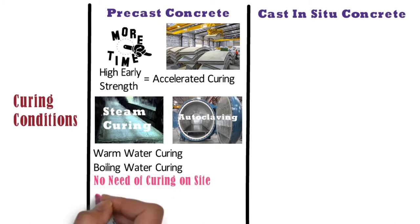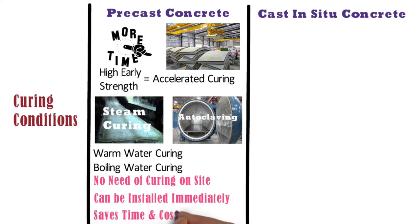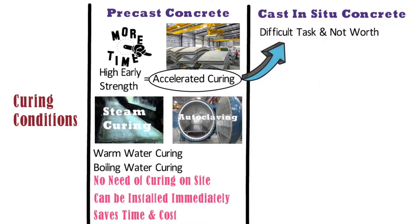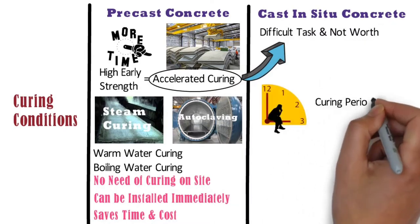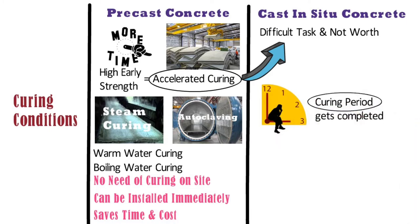Precast members can be installed immediately with no need of waiting for them to gain strength, unlike cast in place. Therefore, it saves time and reduces the cost of construction. Whereas in case of cast in place concrete, accelerated curing is a difficult task and not worth it. Hence, you will have to wait until the curing period is completed, which increases the time of construction.